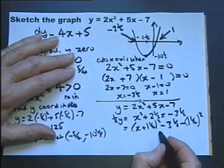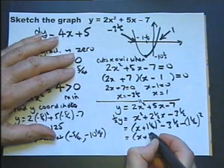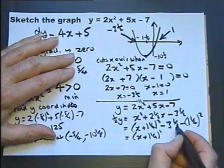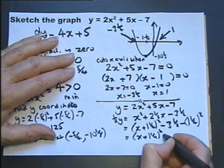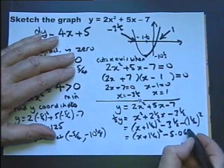And to make this correct, I need to subtract 1 and a quarter squared. Now if you actually work this out,